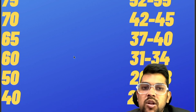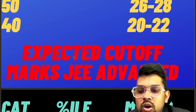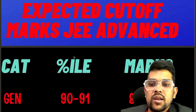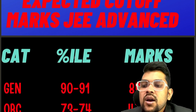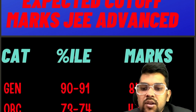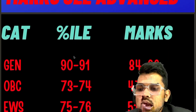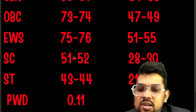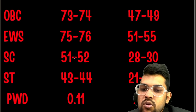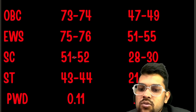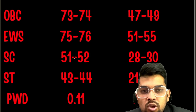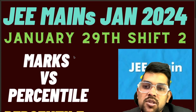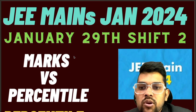For 40 percentile, 20 to 22 marks will be required. Now regarding the cutoff marks — the percentile will remain the same as I have been repeating, but marks will change. For this shift: General 84 to 88 marks, OBC 47 to 49, EWS 51 to 55, SC 28 to 30, ST 21 to 23, and for PWD you just need to reach the center and attend the examination — you are qualified for the Advanced examination.